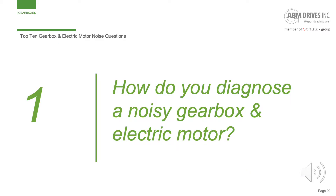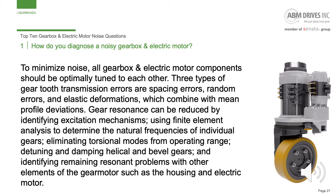And the number one top gearbox and electric motor noise question is: how do you diagnose a noisy gearbox and electric motor? To minimize noise, all gearbox and electric motor components should be optimally tuned to each other. Three types of gear tooth transmission errors are spacing errors, random errors, and elastic deformations, which combine with mean profile deviations. Gear resonance can be reduced by identifying excitation mechanisms using finite element analysis to determine the natural frequencies of individual gears, eliminating torsional modes from operating range, detuning and damping helical and bevel gears, and identifying remaining resonance problems with other elements of the gear motor, such as the housing and electric motor.